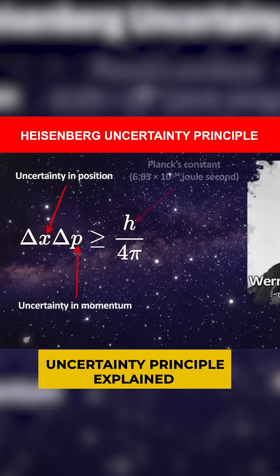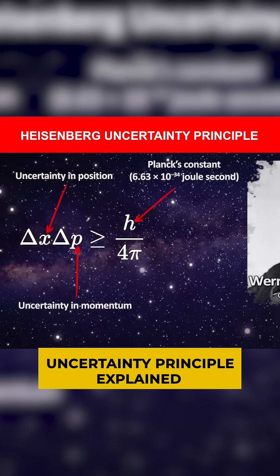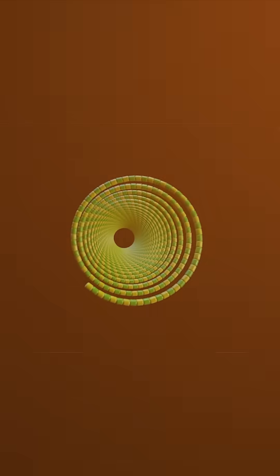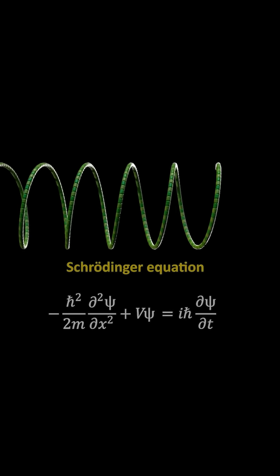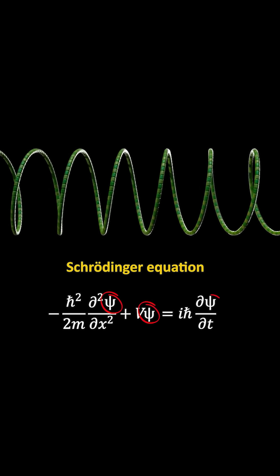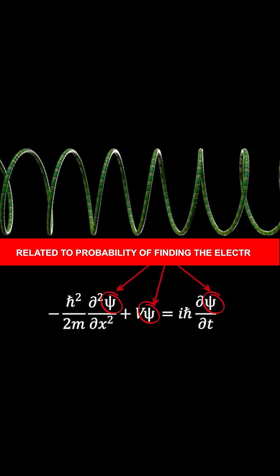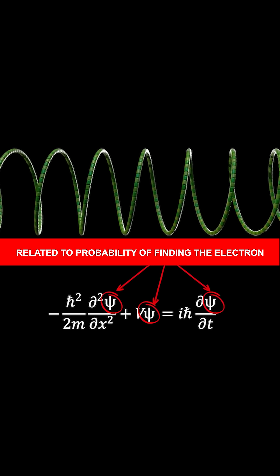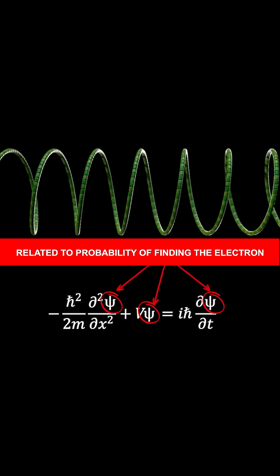It states that you can never simultaneously know exactly where something is and how fast it's going. When we say we can't know where an electron is, what we mean by wave is the wave function from the Schrodinger equation, which is related to the probability of finding the electron at any point in space.